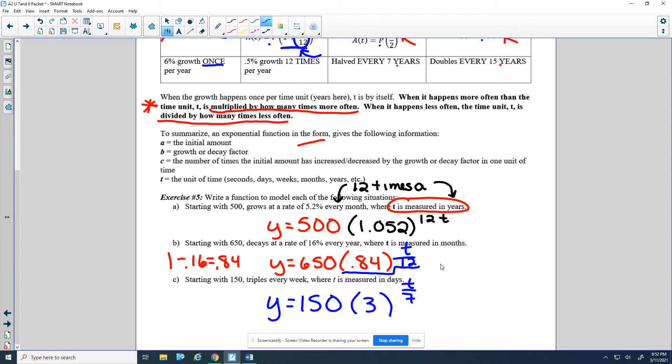So that's that idea. If we need to wait longer than the time period for the change to happen, it's division. If we need to do it more often than the time period, it's multiplication for that c value.